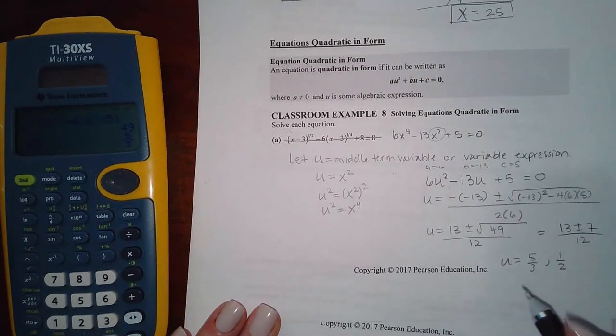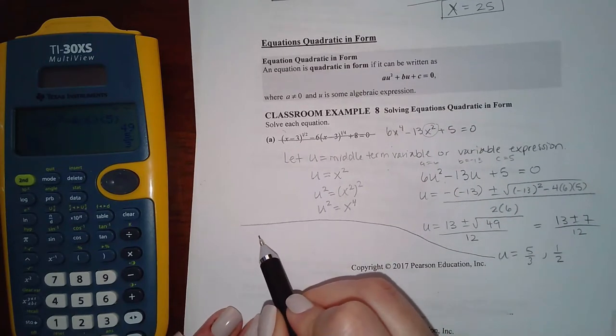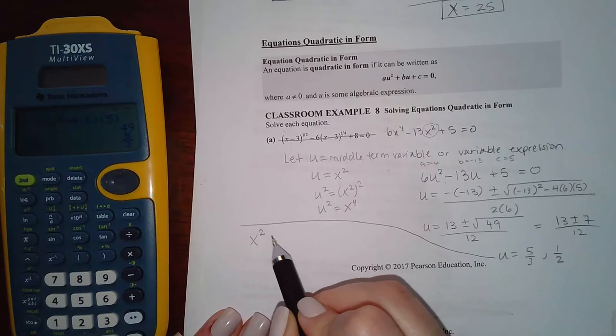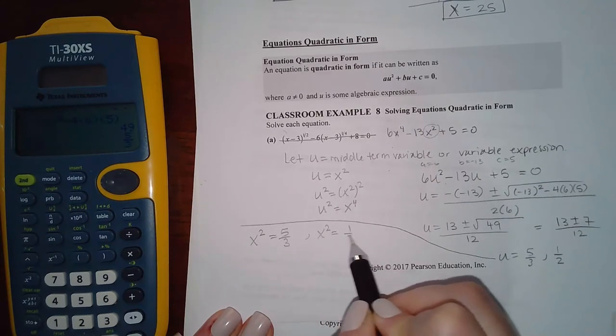Remember what u represents. u represents x squared. So really, this is x squared equal to 5 thirds and x squared equal to 1 half.